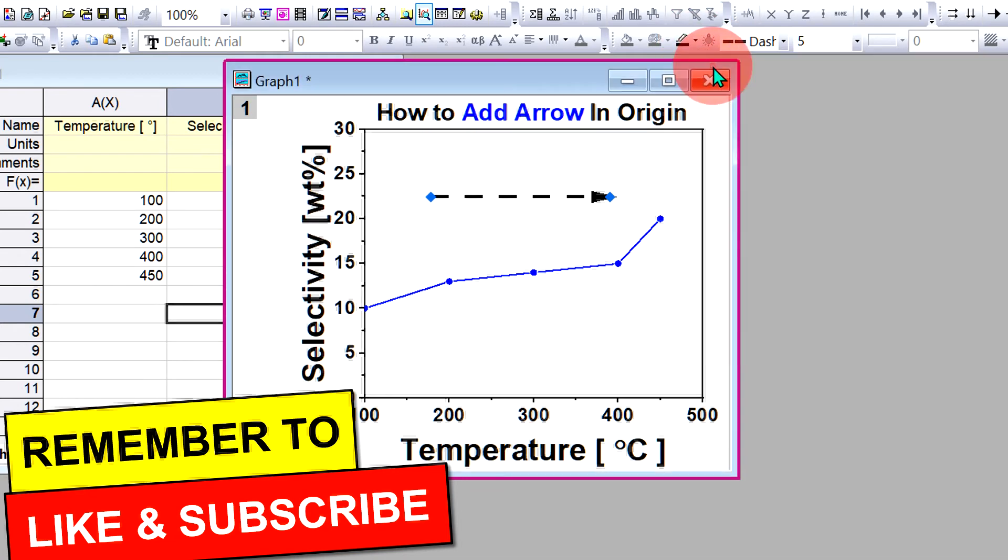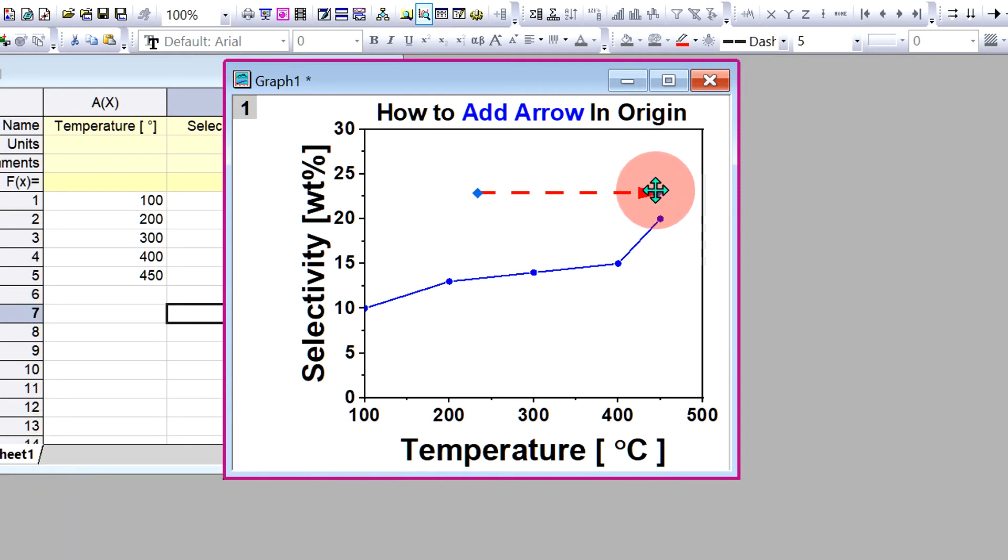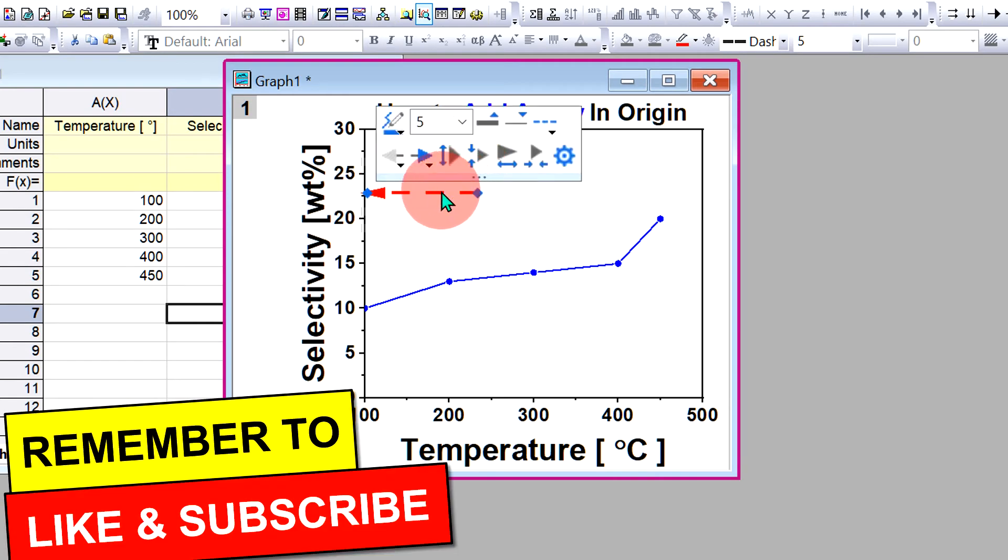And let's say if you want to reverse this arrow press again shift on your keyboard, press on the arrow head and just drag it to extreme left and the direction of arrow will be reversed.